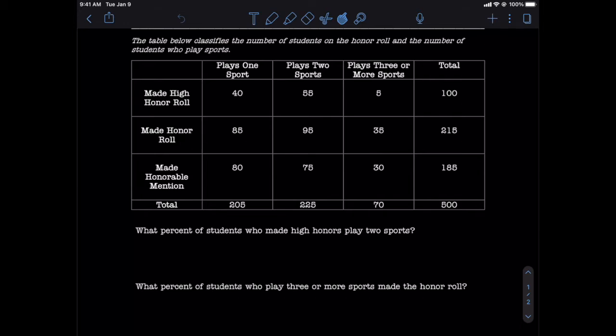We are asked to determine the percent of students who made high honors who play two sports. First, I want to look for the category that follows immediately after the phrase 'percent of.' This is going to tell me whether I need to use the total number of students who made high honors, whether I need to use the total number of students who played two sports, or whether I need to use the grand total of students. And the category that follows 'percent of' is students who made high honors.